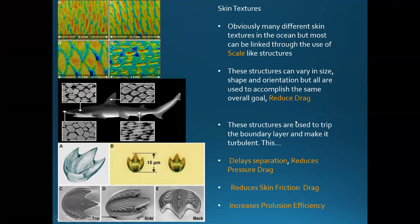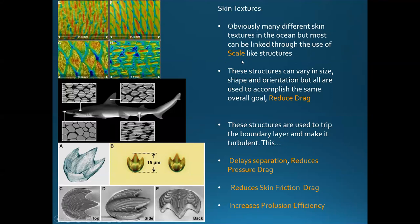Let's talk about the last characteristic I want to cover, which is skin texture. Most fish have scale-like structures on their skin, and most of these are there to reduce drag. They do this by tripping the boundary layer, which delays separation and therefore reduces pressure drag. It can also reduce skin friction and therefore increase propulsion efficiency overall.